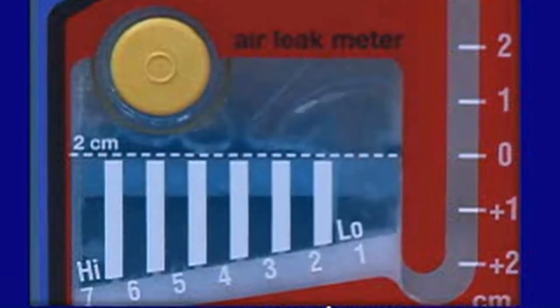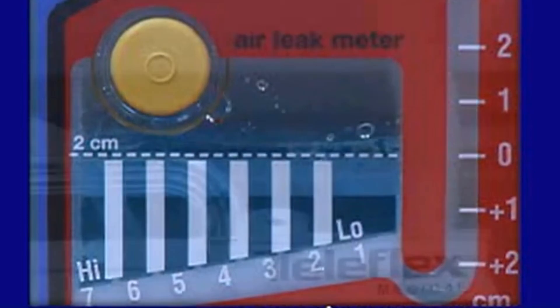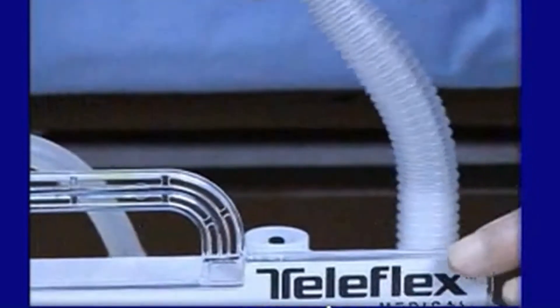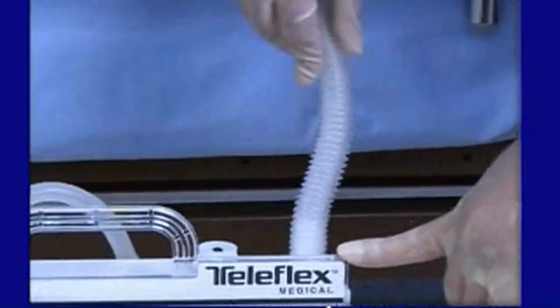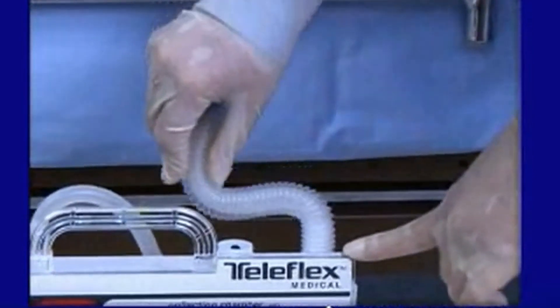By observing which column is bubbling, it can be determined whether the air leak is increasing, decreasing, or constant. At the junction where the 6-foot patient tube connects to the collection chamber, anti-kink tubing is provided as a standard feature.